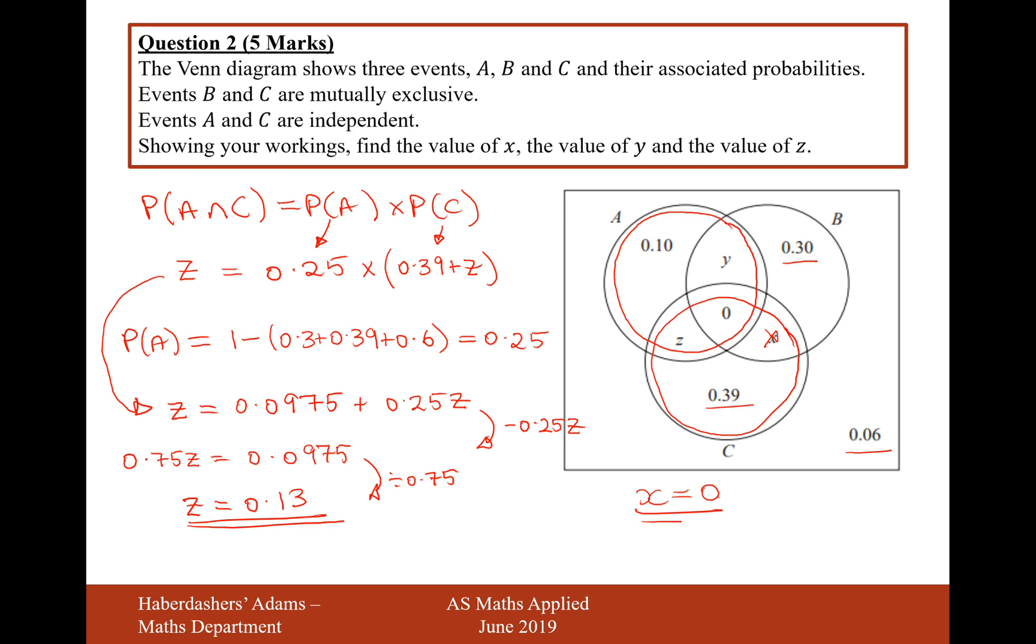So we're very nearly there. We've got two of our variables so far. Now we just need to work out what Y is equal to. Now we know the probability of A is equal to 0.25. So therefore, Y must equal, take away 0.10, that'll be 0.15 now. Take away 0.13, that would be down to 0.02.